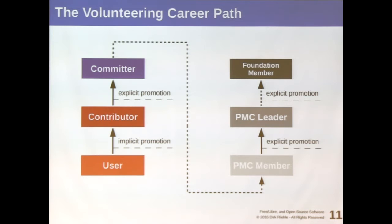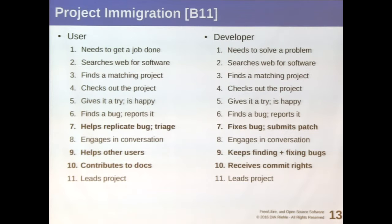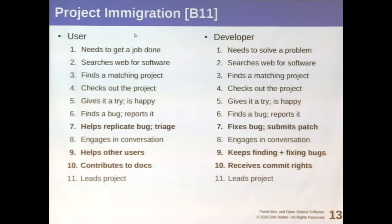We are not the only ones to have worked on this. There are various models that explain this in different forms — we say it's five stages. There's also the Onion model, which simply has more rings. There's Brian Behlendorf, who had this project immigration model, which nicely illustrates how and why people come to open source projects because they have an itch to scratch. But Behlendorf already makes clear you need to distinguish between users and developers — they are different kinds of contributions. Let us simplify this as five stages.